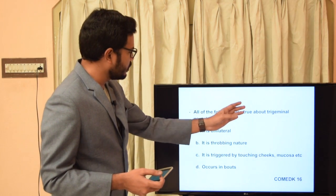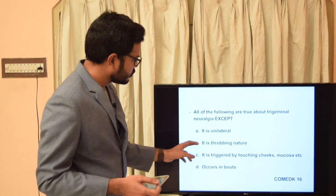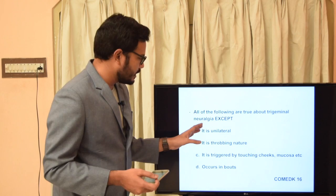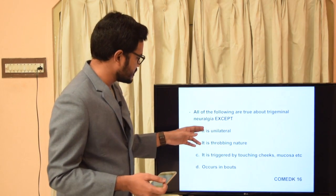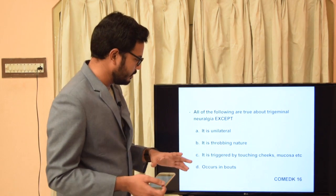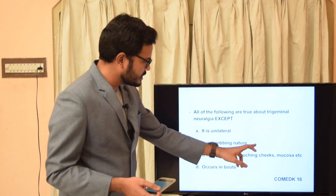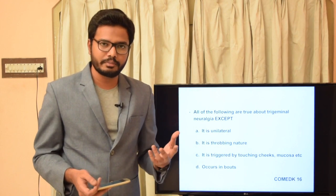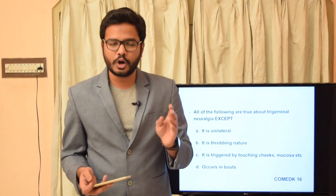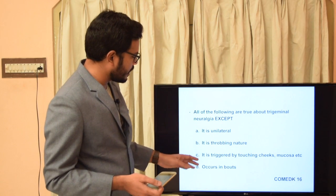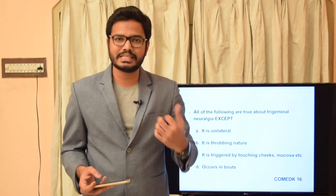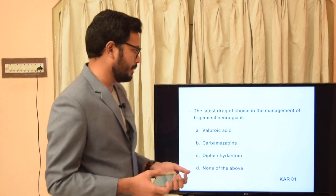MCQ: All of the following are true about trigeminal neuralgia EXCEPT: it's unilateral; throbbing nature; triggered by touching cheeks/mucosa; occurs in bouts. The answer is 'throbbing nature' — trigeminal neuralgia pain is searing, stabbing, and lancinating, not throbbing. The other options are correct: it is unilateral, triggered by touch, and occurs in short intense bouts.